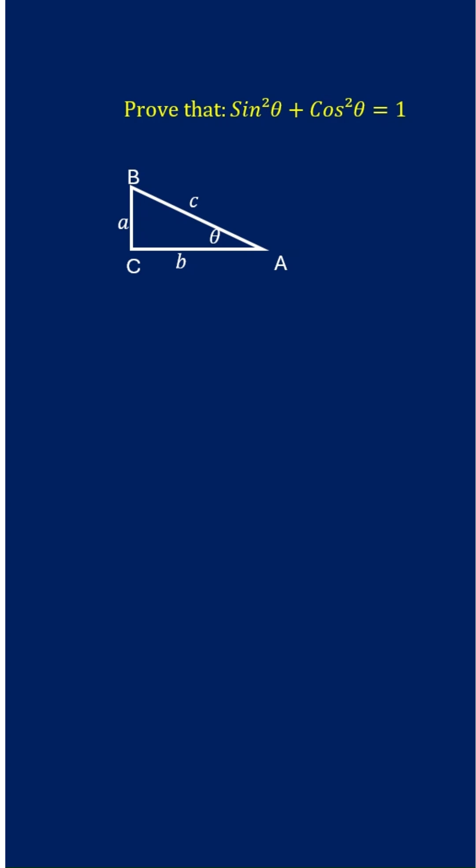This is theta, the angle of concern. BC equals small a, which is the opposite side. AC equals b, the baseline or adjacent side. AB equals c, which is the hypotenuse, the longest side of the right angle triangle.